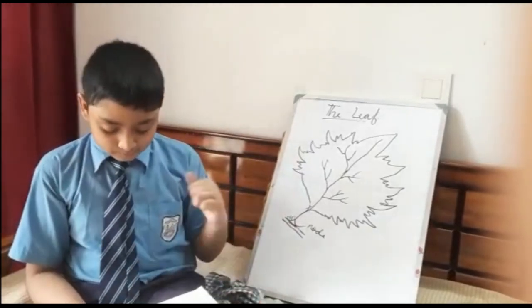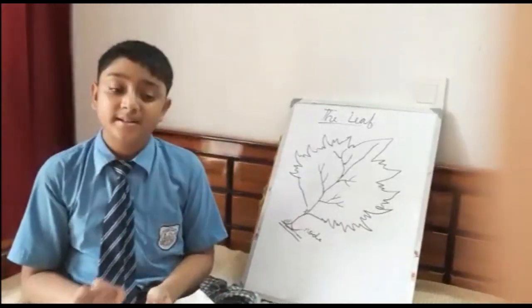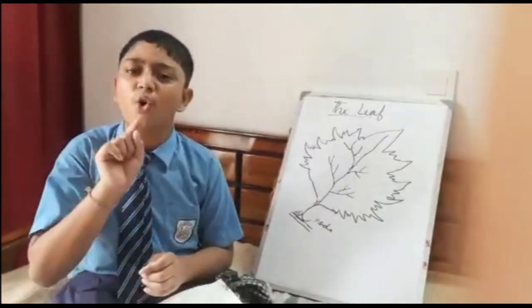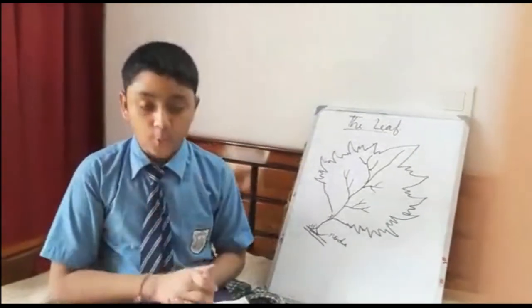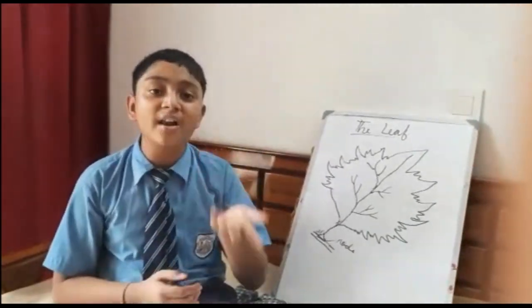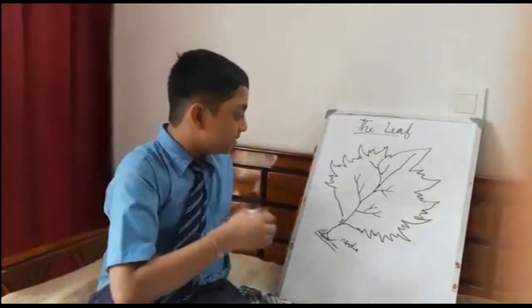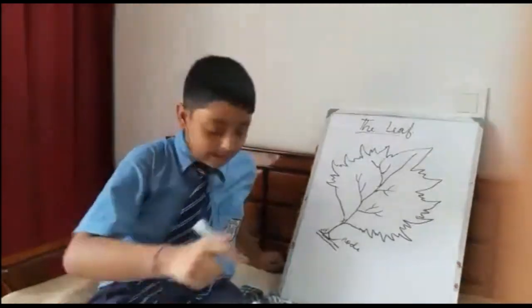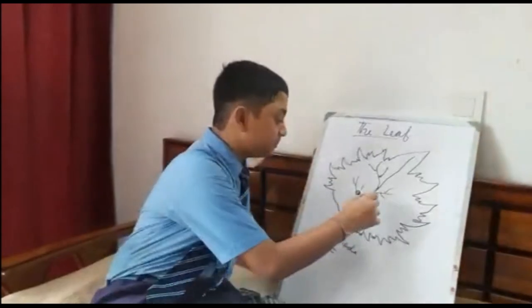But there are some unique parts that all the leaves contain. What are the parts? Lamina or leaf blade. What is the lamina? The flat, thin, flat and expanded part that you can see.